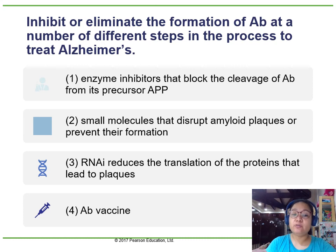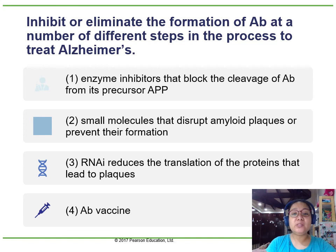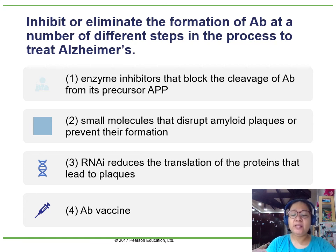RNAi reduces the translation of proteins that lead to plaque formation. Another option would be an AB vaccine — a vaccine that stimulates the immune system to clean up amyloid plaques, or one that prevents their formation altogether. In fact, there are already such vaccines that appear capable of protecting mice from Alzheimer's-like symptoms. There is therefore hope that a similar vaccine could be developed for use in humans.